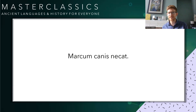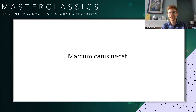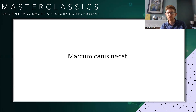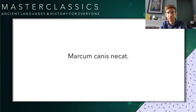Now: marcum canis necat. Take a moment to translate. Marcus is not doing the verb here — he can't be, even though he's at the front of the sentence, because he's got his accusative 'm' ending. In this instance it's the dog who kills Marcus. Exceedingly dark example, but that's just the way the cookie crumbles.